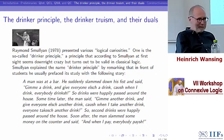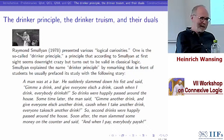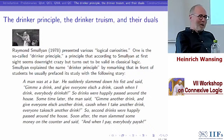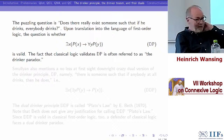Smullyan explained the name 'Drinker Principle' by remarking that in front of students, he usually prefaced its study with the following story. A man was at a bar and suddenly slammed down his fist and said: 'Give me a drink and give everyone else a drink. Of course, when I drink, everybody drinks.' Drinks were happily passed around the house. Sometime later, the man said: 'Give me another drink and give everyone else another drink. Of course, when I take another drink, everyone takes another drink.' Second drinks were passed around. Then the man slammed some money down and said: 'And when I pay, everybody pays.'